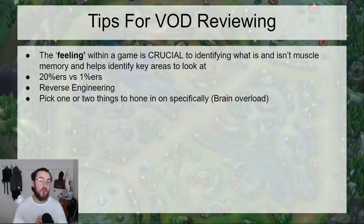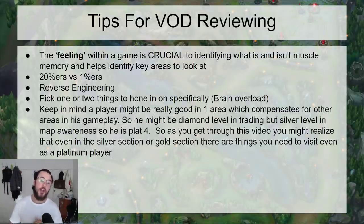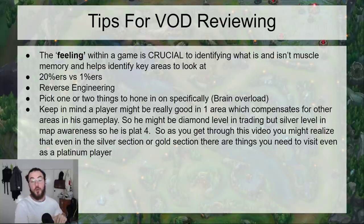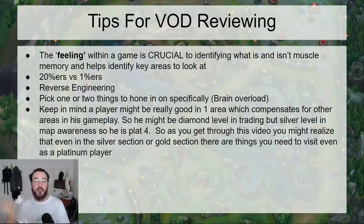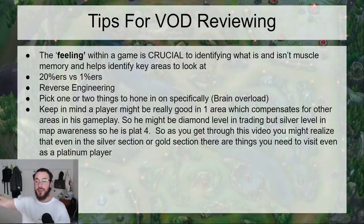Pick one or two things to focus on, because going through all of this can cause brain overload. You can refer to this VOD multiple times. Also keep in mind that a player can be really good in one area, which compensates for other areas. So they might be diamond level in trading on a specific champion, but their map awareness is at a silver level — making them maybe a mid-platinum player. Don't just view it as 'I'm a gold player, so I'm gold at every single aspect of the game.' We all have certain elements of gameplay that are better than others. This is why I recommend if you're a diamond player, don't just skip to the diamond section.